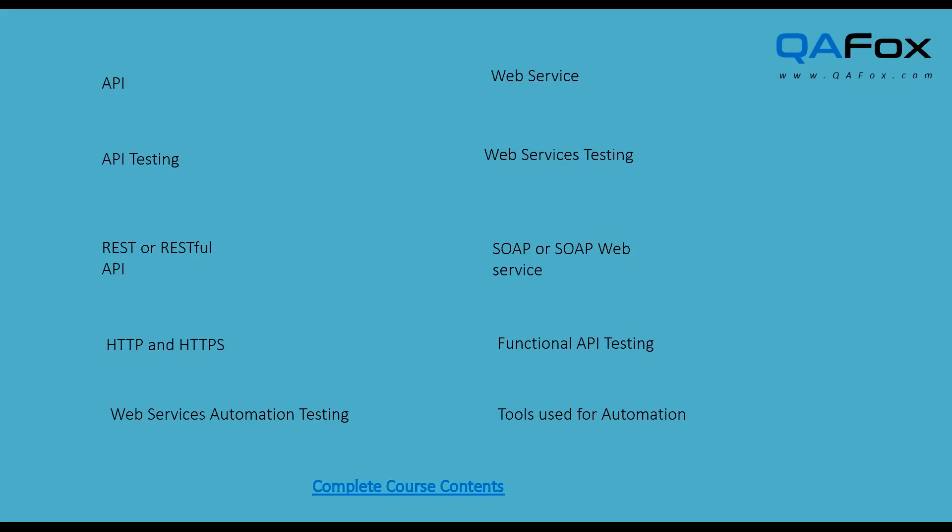Considering these are the high-level contents of our course, we can dig deeper into all these contents and learn everything. To see the whole course contents, we can go through our website QAFOX. You can see the whole course contents there — the course name is API Automation, with all concepts covered, including projects. You can see the PDF and download it as well, along with a summary, prerequisites, and course contents.